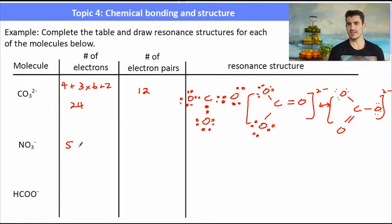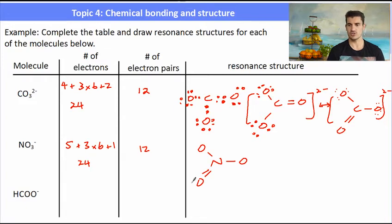The nitrate ion: nitrogen has five, we have three oxygens times six plus one for the extra negative charge. I've got to have 12 pairs of electrons around my nitrogen atom. I start off with connecting all of the oxygens. The nitrogen really can only have three bonds, but in this case it's going to form four, giving me the rest of the pairs to be carried by the oxygens.